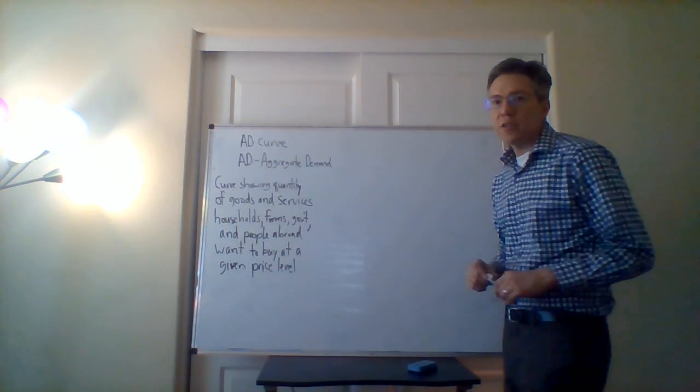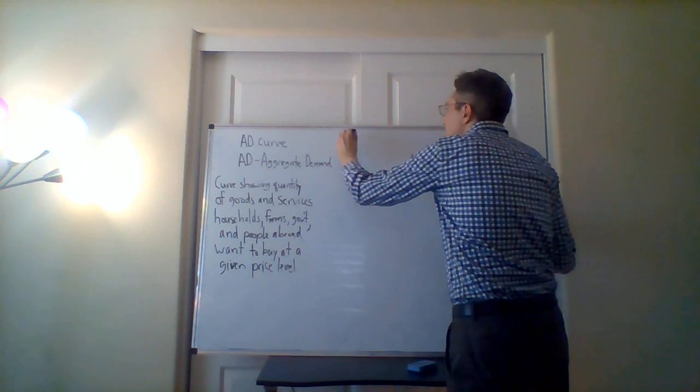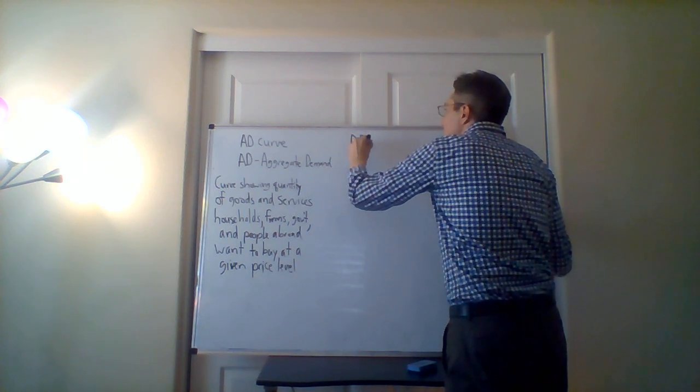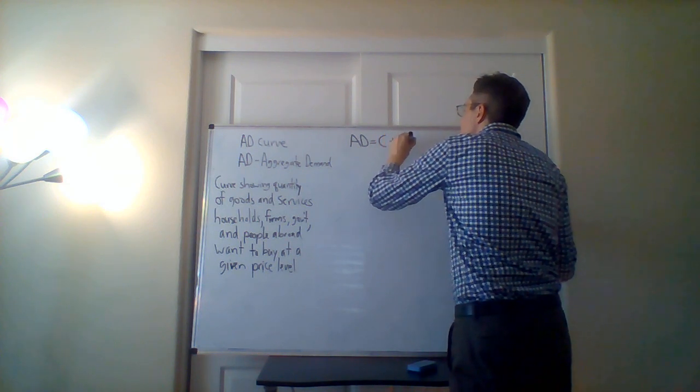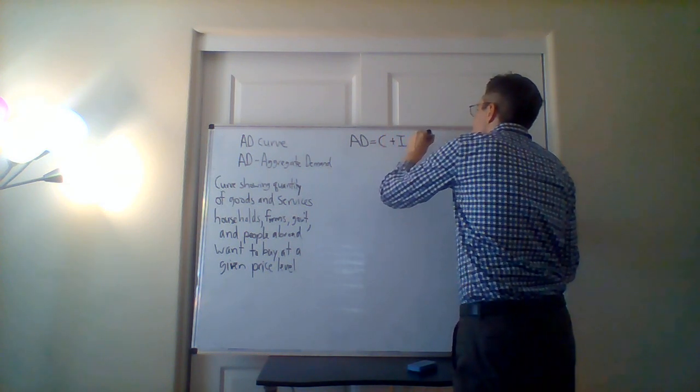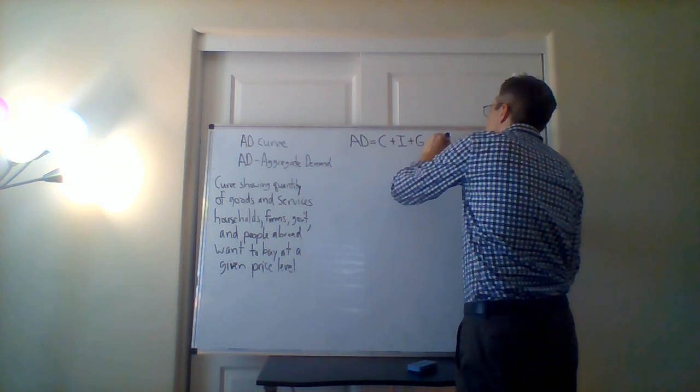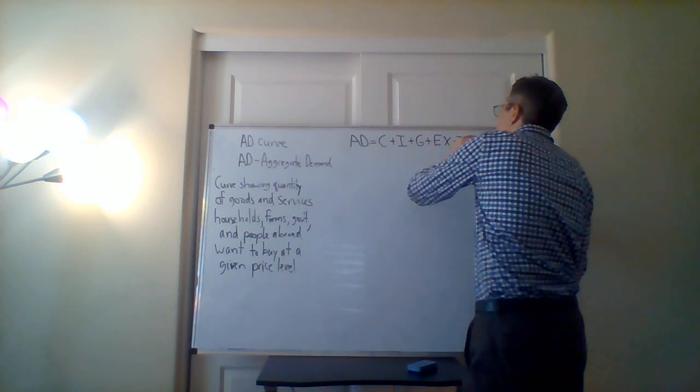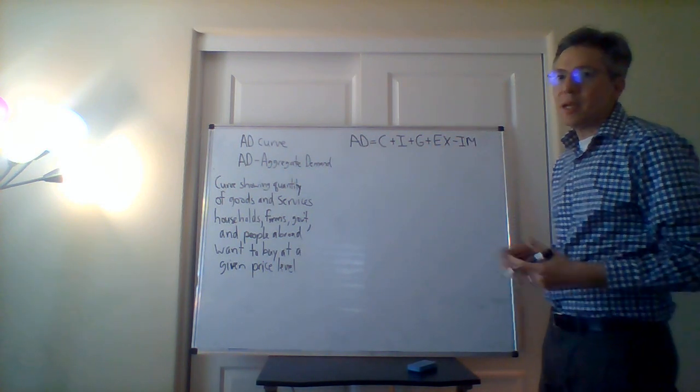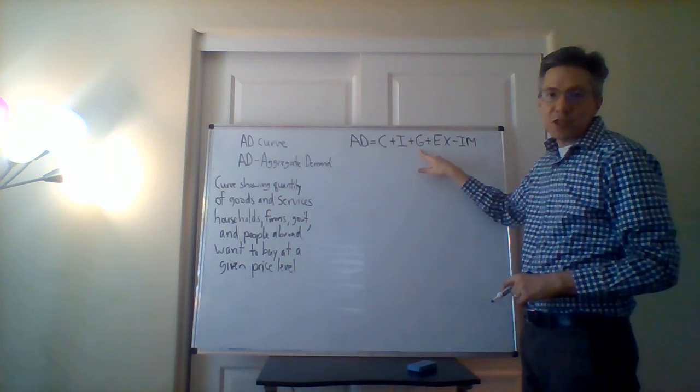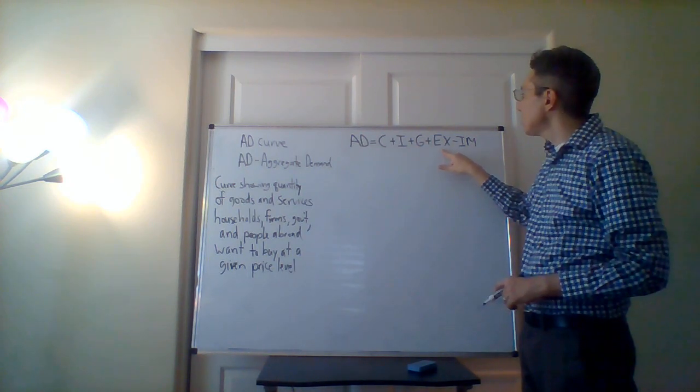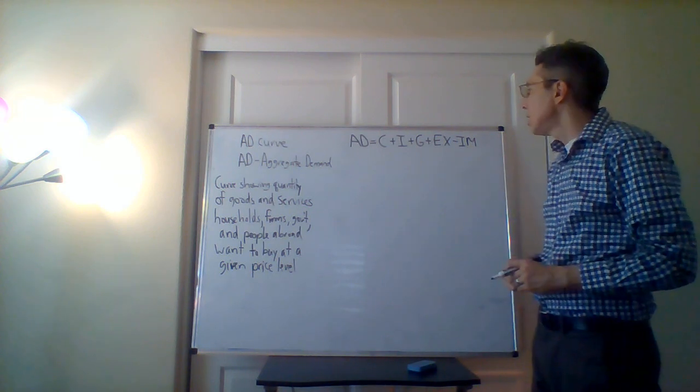So in terms of an equation for this curve, we have the following: the aggregate demand is equal to the consumption plus I for investment plus G for government spending plus the exports minus the imports.